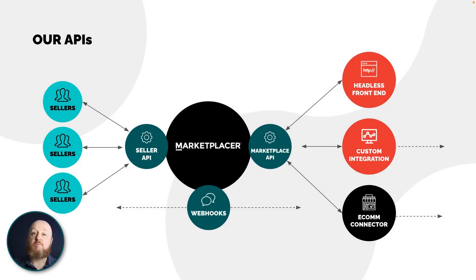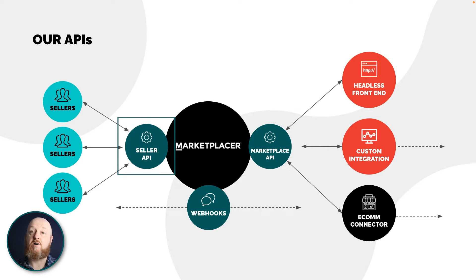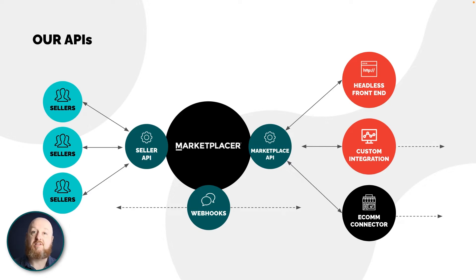So the APIs that we offer — we offer two. The first one, not surprisingly, is the Seller API. We offer that to sellers, or more correctly, the Marketplace operator can offer that to the sellers on the Marketplace. It allows them to basically automate all the processes and things that a seller would typically want to do on a Marketplace, and we'll talk a bit more about what those are on the next slide.